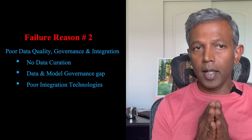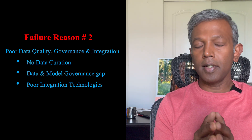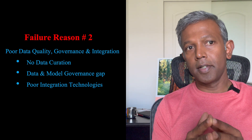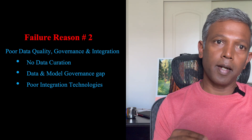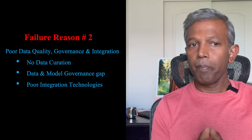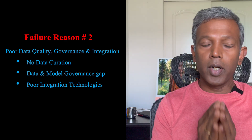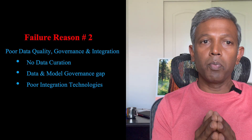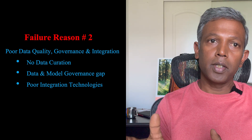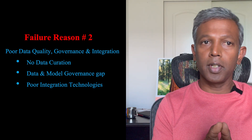The second reason is data quality, governance, and integration. These three major areas are not being focused on by people adopting AI agentic or generative AI solutions. On data quality specifically: your data is the key. You must collect, organize, analyze, and curate the data before feeding it into the model. If you fail in this area, your AI agentic solution will fail.